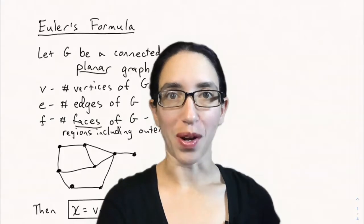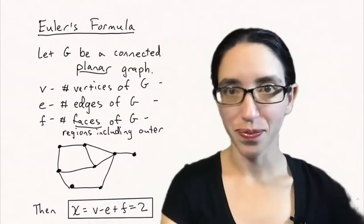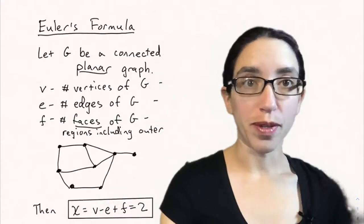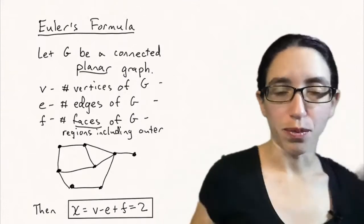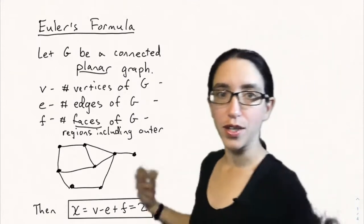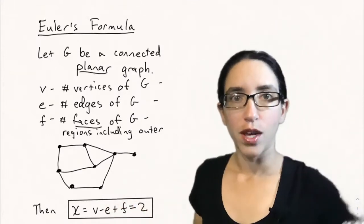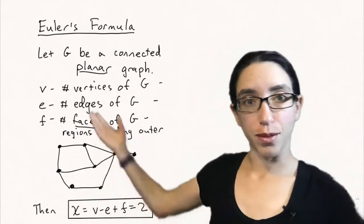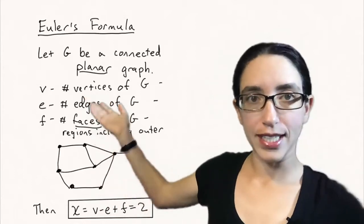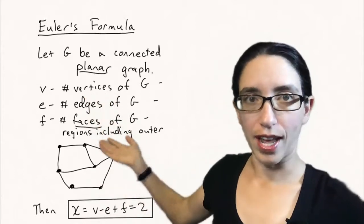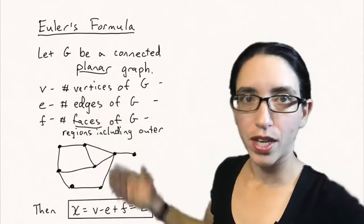Hello and welcome back to Math 301 Combinatorics at CSU. Today we're going to be talking about Euler's formula for planar graphs. This is a formula that computes a quantity known as the Euler characteristic of a planar graph, which is defined in terms of the vertices, the edges, and the faces of a graph.